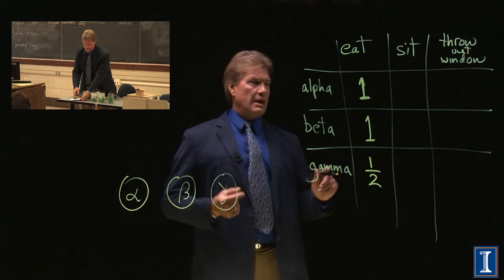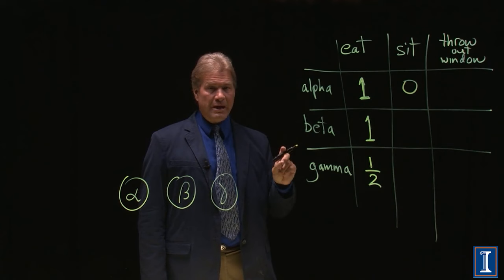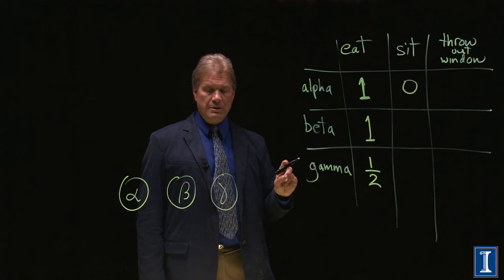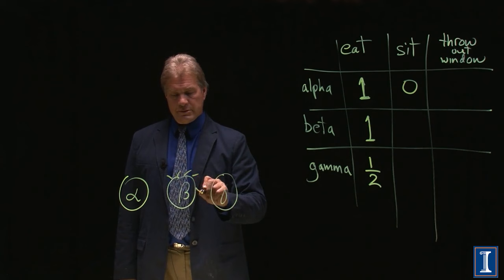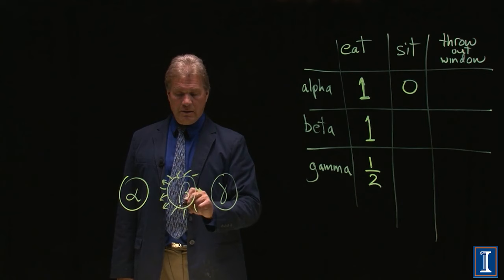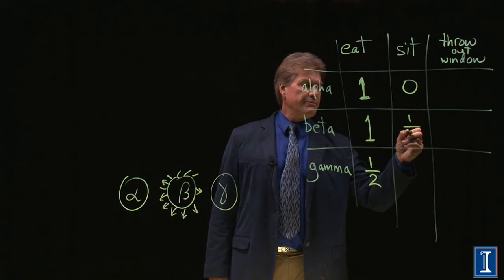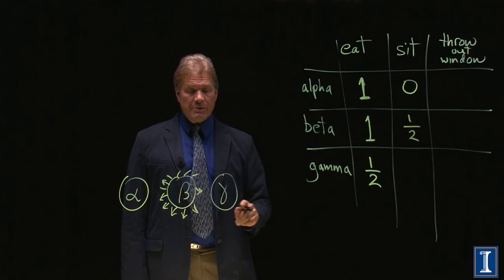What about sitting on them? Alphas are stopped very easily. Even your clothes stop the alphas. Betas, unless you're wearing thin aluminum pants, if you sit on the beta source, some will get you. But this beta source is emitting, your cookie is emitting radiation in all directions. So if you sit on it, some of the betas are going to go towards the floor, not towards your body. Again, I don't know the exact fraction, but let's say it's a half.